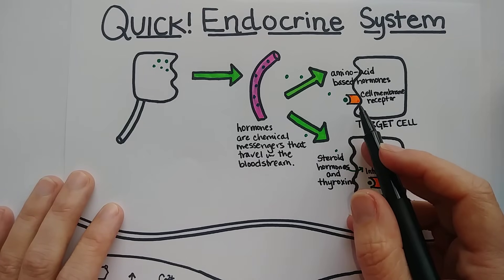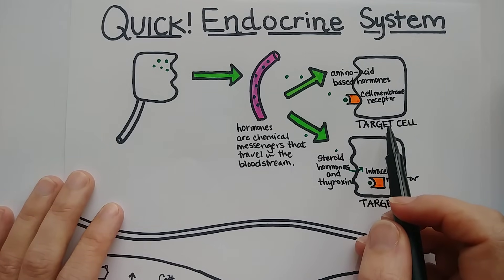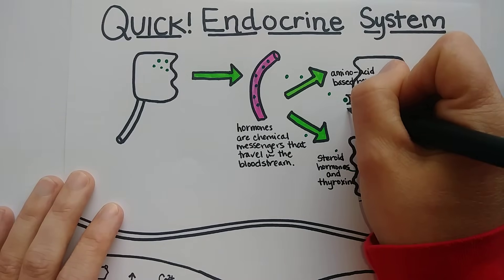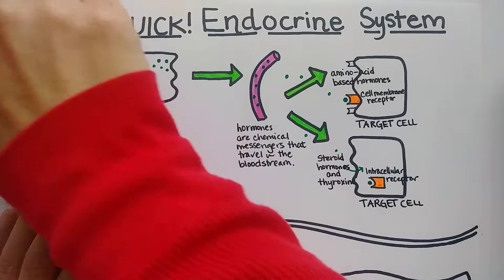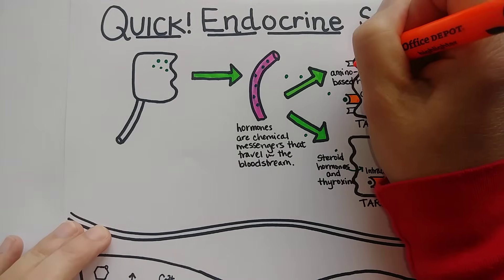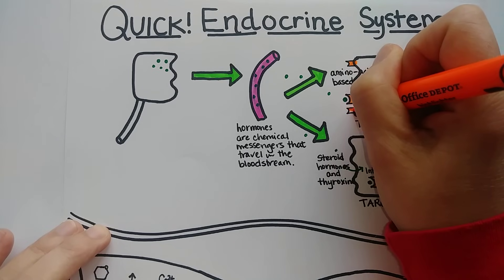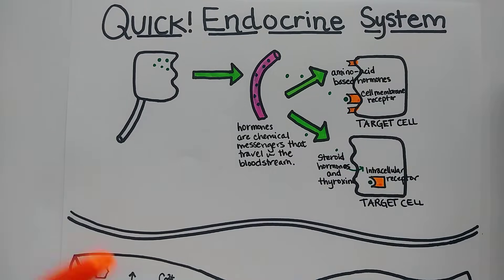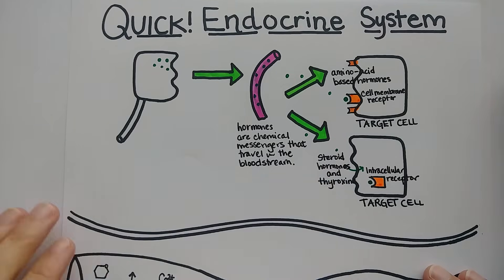Just one comment about sensitivity: if we say that a cell is very sensitive to a hormone, it usually means there are many receptors on the surface. For example, if a cell is sensitive to insulin, it will have a lot of receptors for insulin. If it is resistant, it will have fewer.